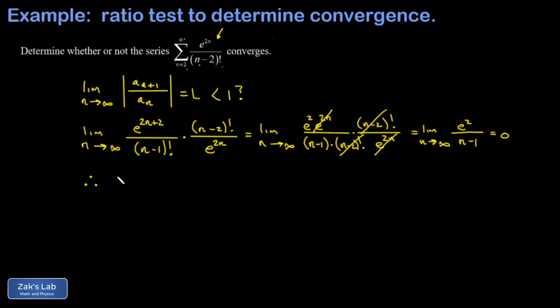Therefore, the sum as n goes from 2 to infinity of e to the 2n over n minus 2 factorial converges. And we're done.